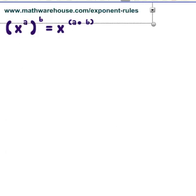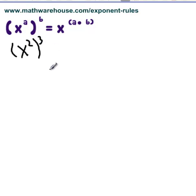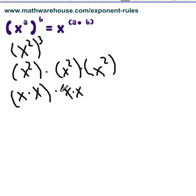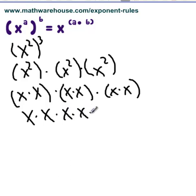What about this rule? x to the a to the b equals x to the a times b. This can also be explained with a quick example. If I have x to the second to the third, we can rewrite this as x to the second times x to the second times x to the second — that's x to the second multiplied by itself three times. We can further rewrite this as x times x times x times x times x times x. We can get rid of the parentheses, and lo and behold, we have x to the sixth — one, two, three, four, five, six of them.